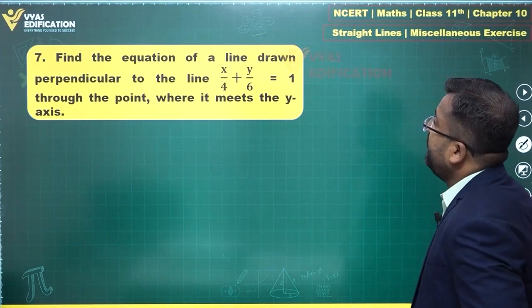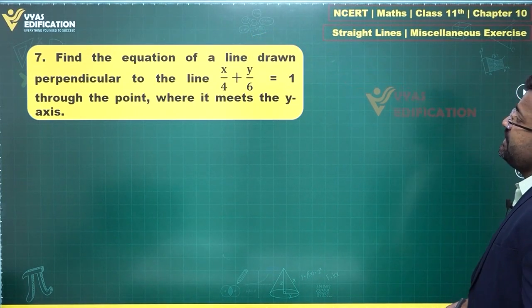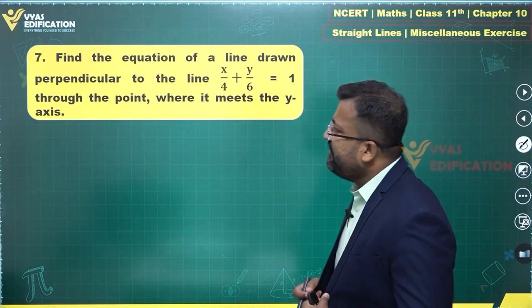The seventh question says find the equation of a line drawn perpendicular to the line x/4 + y/6 = 1 through the point where it meets the y-axis.